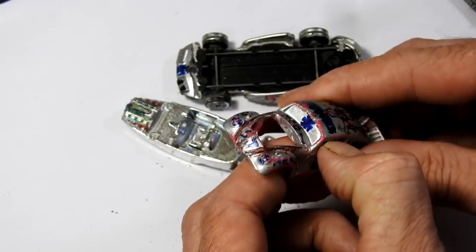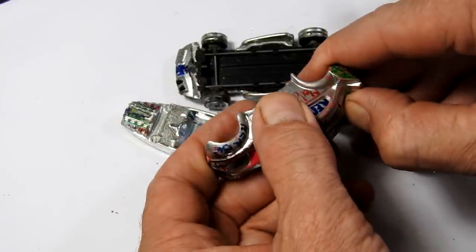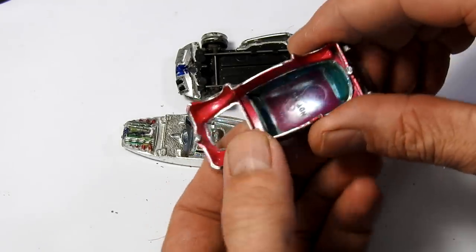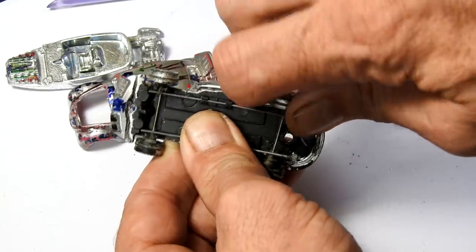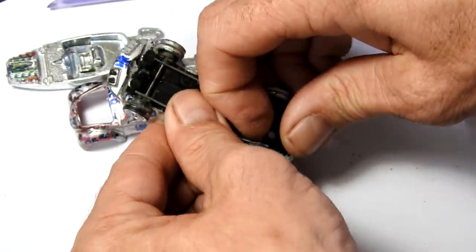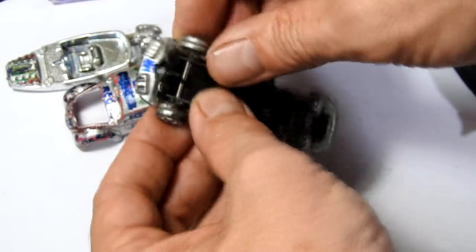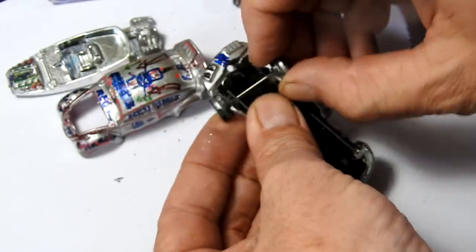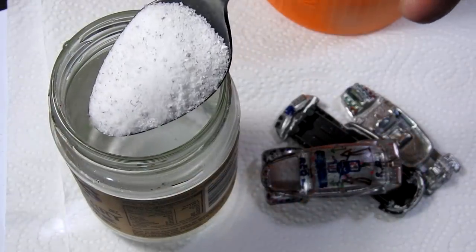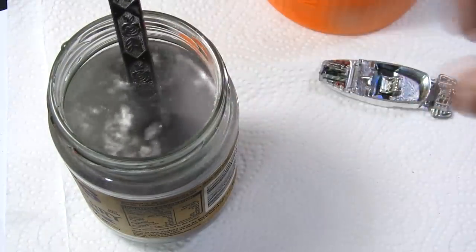And I tried to press the windscreen out, but that was just stuck in too much with the silver paint. So I'll use some caustic soda to loosen that up. Pop the wheels and axles out from under the suspension. And here I've just got a glass jar with some hot water in it, a spoonful of caustic soda. I'll just pop my parts in there.